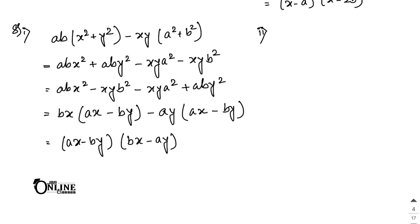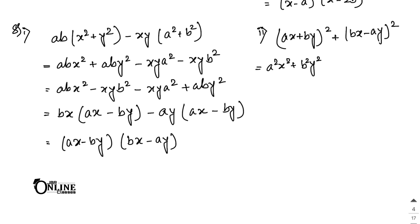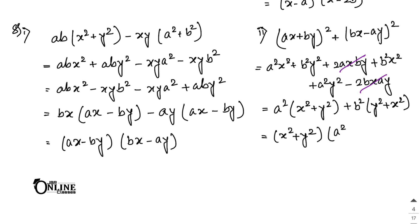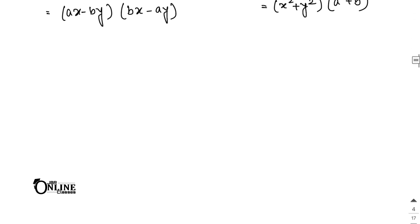Sum 8.2: (ax + by)² + (bx - ay)². Expand using the (a+b)² and (a-b)² formulas: a²x² + b²y² + 2axby + b²x² + a²y² - 2bxay. The middle terms cancel out. Common a² gives a²(x² + y²). Common b² gives b²(y² + x²). So the answer is (a² + b²)(x² + y²).